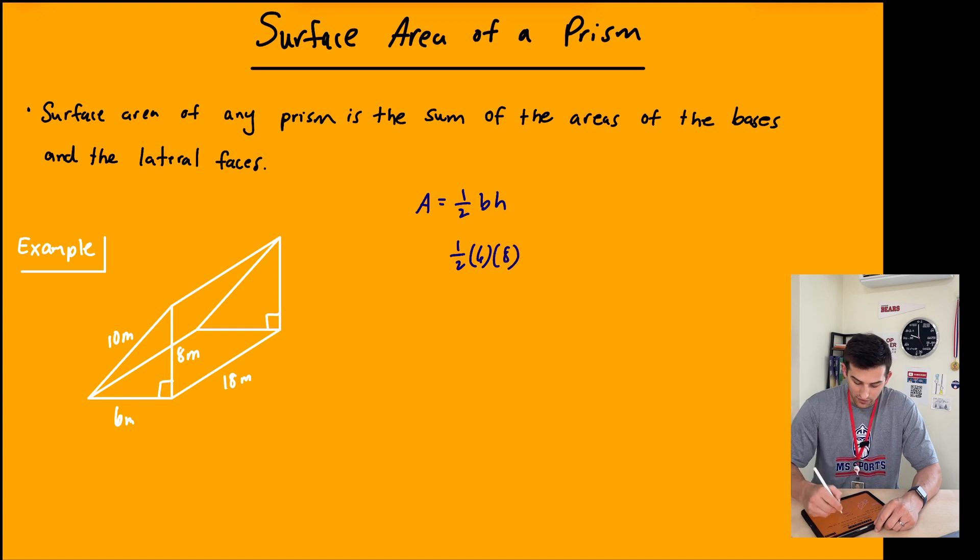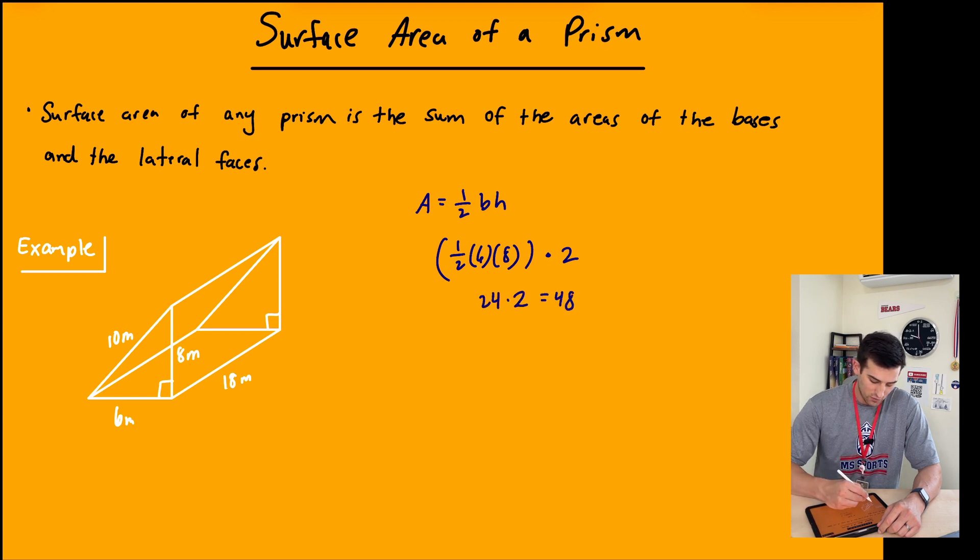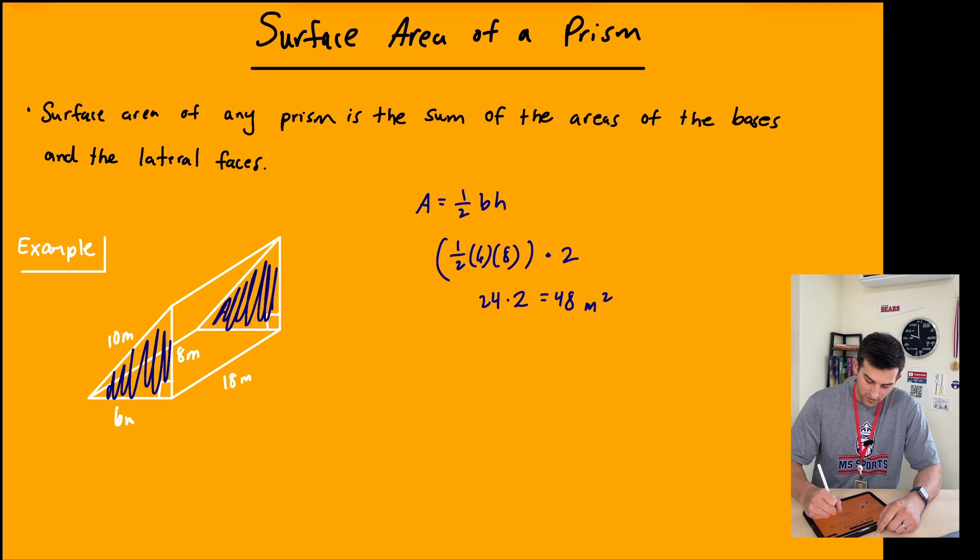Now we have two of those, so I'm going to put this in parentheses and multiply by two. Six times eight is 48, and then half of 48 is 24, and 24 times two is 48. So that's for the two triangles here. We've got 48 square meters—let's put a little star by that.